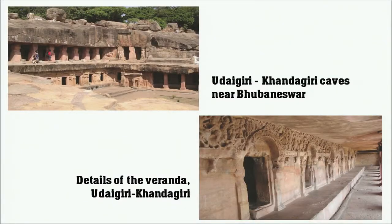Near Bhubaneswar, the Khandagiri and Udayagiri caves have long verandas built as shelters, with Chaitya halls for prayer and meditation inside and Viharas where monks lived. These caves have a lot of relief work — not many paintings, but significant sculptural and masonry activity. All the pillars visible there are man-made, carved out of rock.